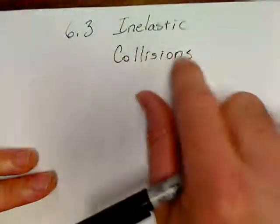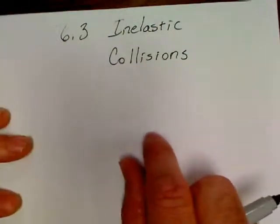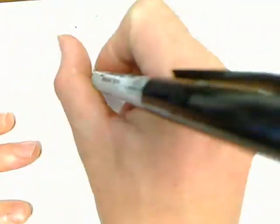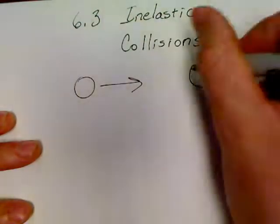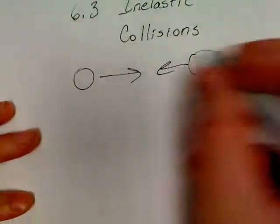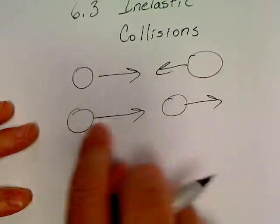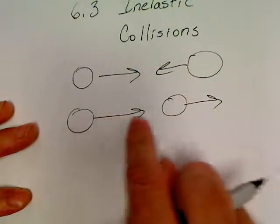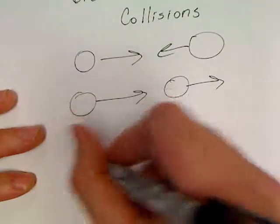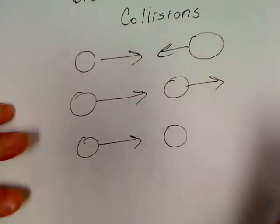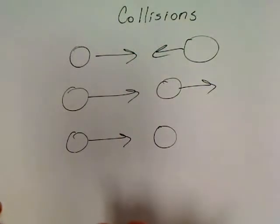Unit 6.3, inelastic collisions. In other words, we're to the part of physics where things run into each other. It could be something as simple as two balls thrown at each other, or something thrown at something trying to get away, or something thrown at something sitting still.